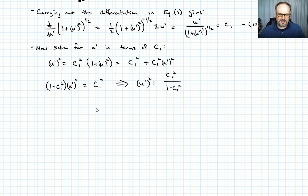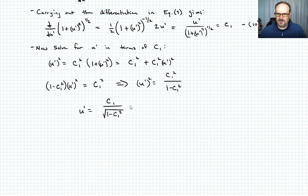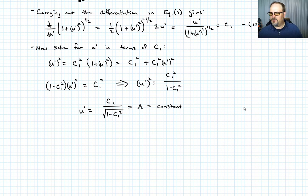Taking the square root of both sides, u prime equals c1 divided by the square root of (1 minus c1 squared). Whatever c1 happens to be, this entire expression is a constant — we can just call it a. Call this equation 11.